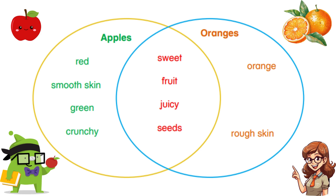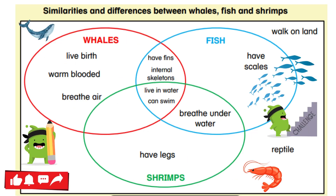So easy peasy lemon squeezy! Now you might ask: am I always going to have two circles? Well, not always. Sometimes we can have three circles, like in this example, but it works the same way.